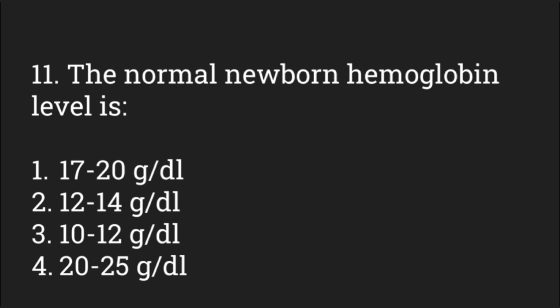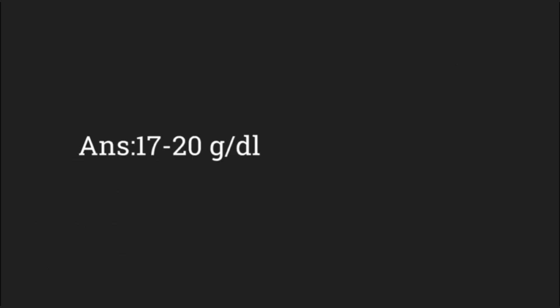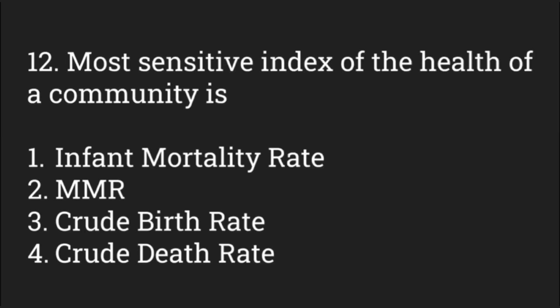The normal newborn hemoglobin level is — options: 17–20 g/dL, 12–14 g/dL, 10–12 g/dL, 20–25 g/dL. The answer is 17–20 grams per deciliter. The most sensitive index of health of a community is — options: infant mortality rate, maternal mortality rate, crude birth rate, crude death rate.